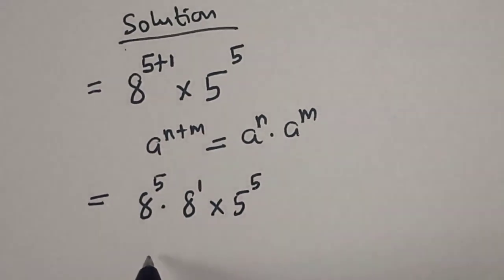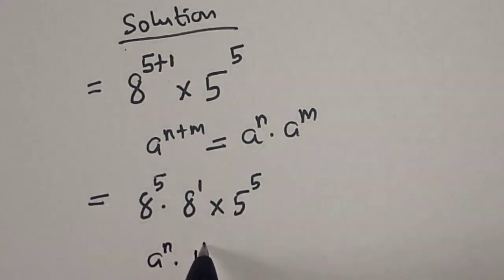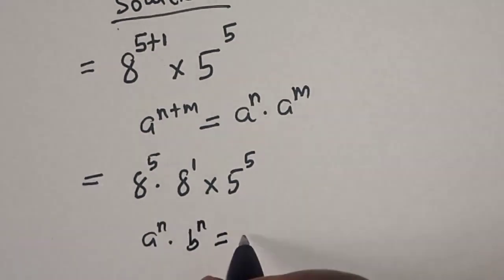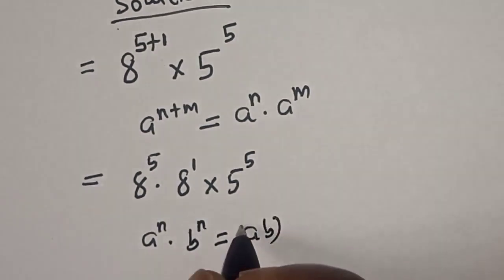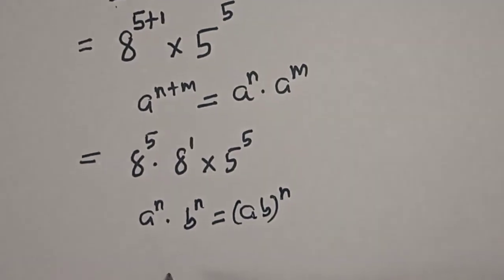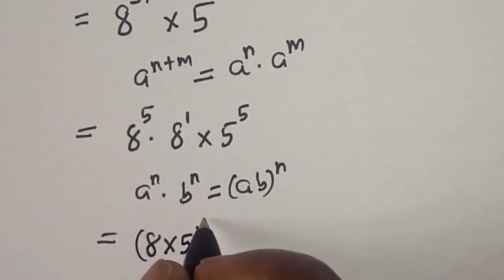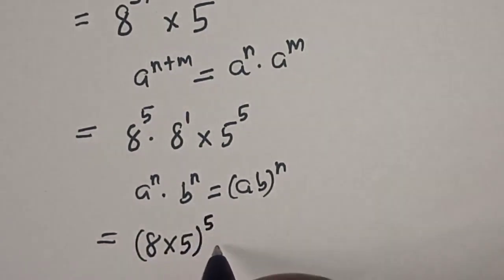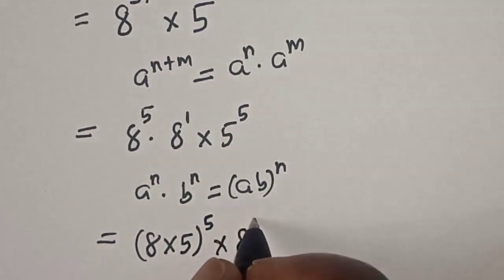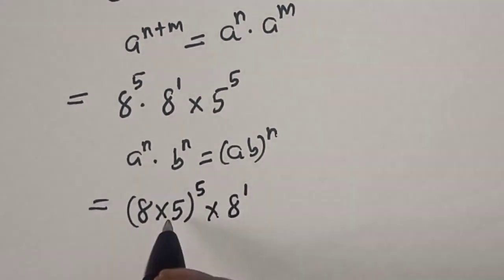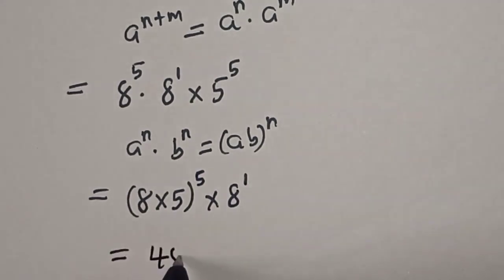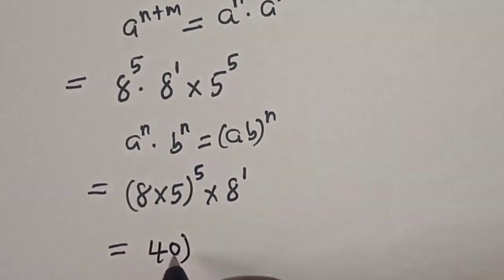Now we have power of 5 and also power of 5. If you have a raised to the power n multiplied by b raised to the power n, this is equal to ab to the power of n. So we have 8 multiplied by 5 to the power of 5, multiplied by 8 raised to the power 1.